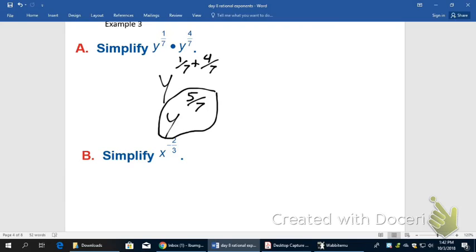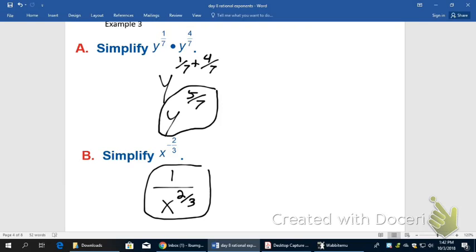Alright, next thing is the x to the negative 2/3rds. What's going to happen there is because of the negative exponent, you're going to move that to the denominator, 1 over x to the 2/3rds. Now that it's a positive exponent, that would actually be good, and we're going to stop it right there.